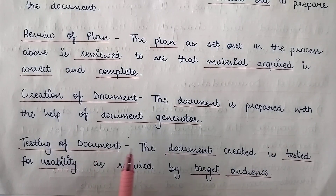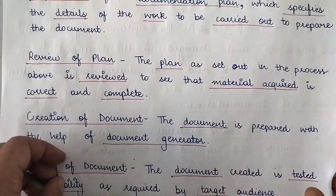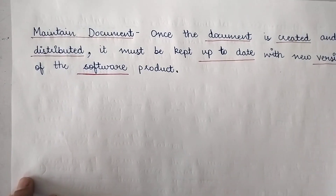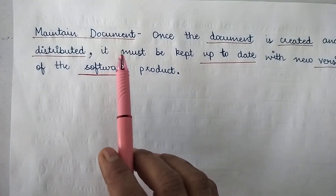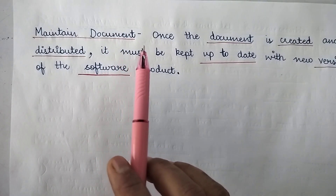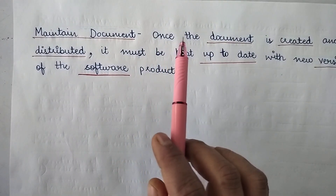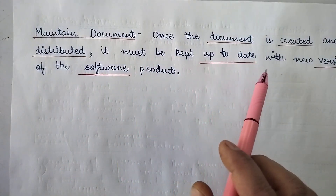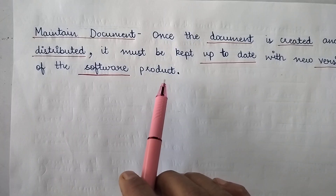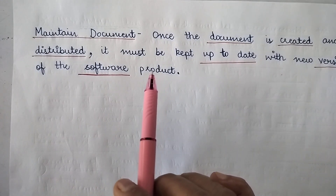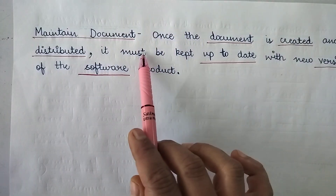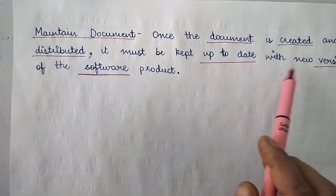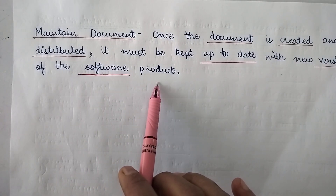The fifth step is the testing of the document, wherein the document created is tested for usability as required by the target audience. The sixth step is to maintain the document. After the document has been tested, the next step is to maintain it so that it is always valid and can be used for future references. Once the document is created and distributed, it must be kept up to date with new versions of the software product, updated on a timely basis with whatever new version of the software is introduced in the information system.